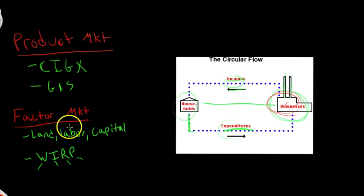And so that's the factor market, and this is the product market. So this is from houses to businesses. Houses to businesses. This is from businesses to houses. Land, labor, capital, that's from houses to businesses. And then WIRP, W-I-R-P, is from business to house.